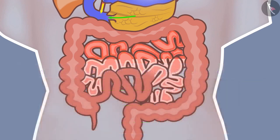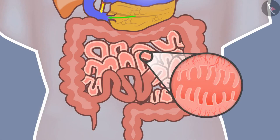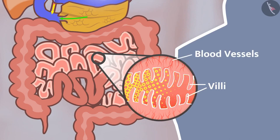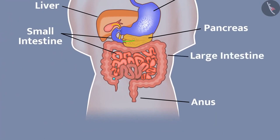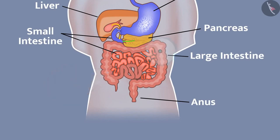The wall of the intestine absorbs the digested food. The inner lining of the small intestine has numerous finger-like projections called villi, which increase the surface area of absorption. In the villi, there are abundant blood vessels that absorb food and carry it to each cell of the body. After this, the undigested food enters the large intestine. The villi present there absorb water from the undigested material. Waste material is removed from the body by the anus, and the anus sphincter regulates the exit of waste material.